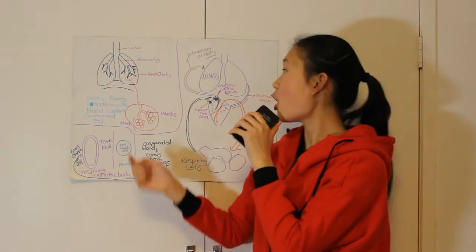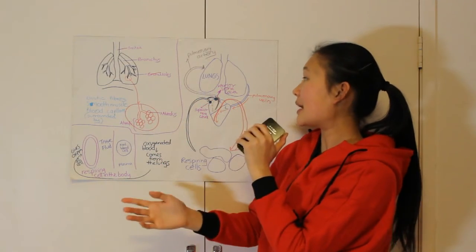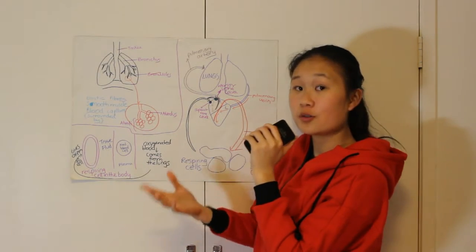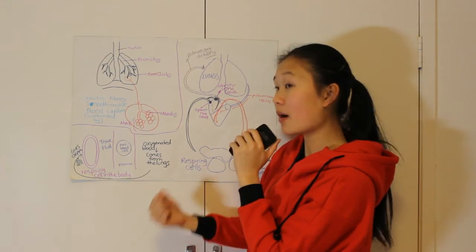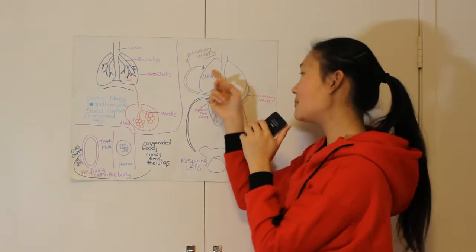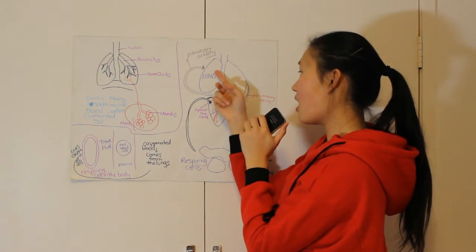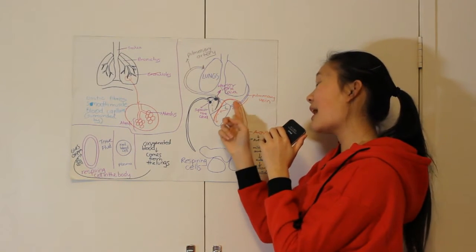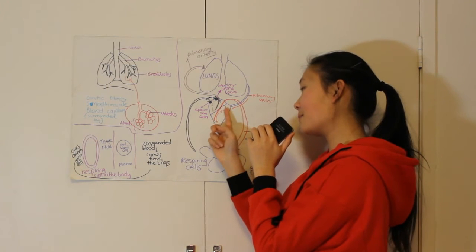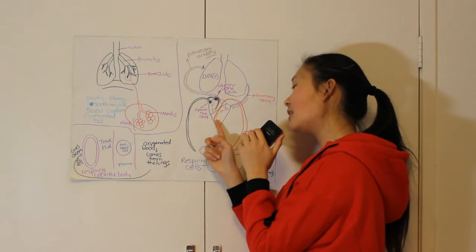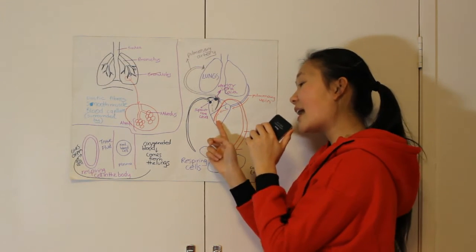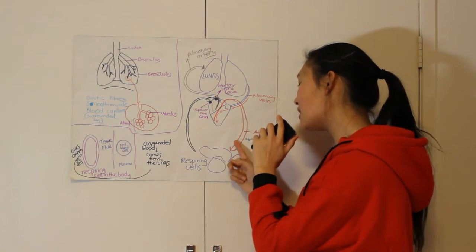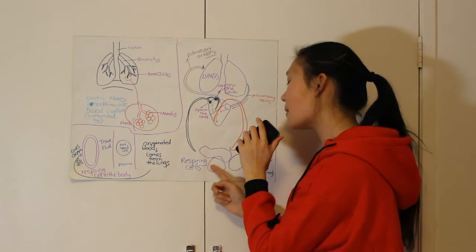How is blood taken from the lungs to the respiring cells in our body? The oxygenated blood here will be taken through the pulmonary vein into the left atrium, down into the left ventricle, and it is boosted up through and into the aorta and then into respiring cells.